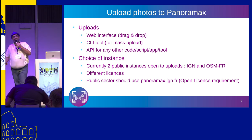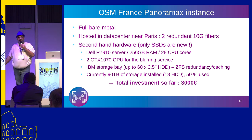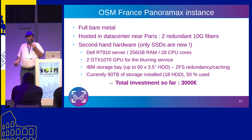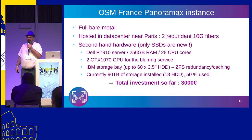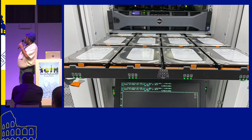Public sector should use the IGN instance because of licensing. OpenStreetMap France decided to install our own Panoramax instance on a full bare-metal server hosted in a data center near Paris — second-hand hardware except the SSDs. We invested only 3,000 euros but we can store quite a lot. We're currently using only 50 percent of our storage and have room to add new disks. One server is in the data center; the other was in my basement for testing.